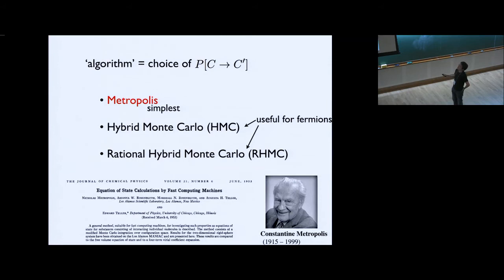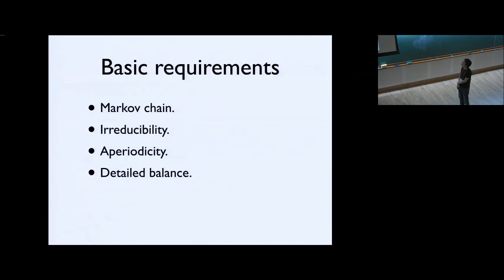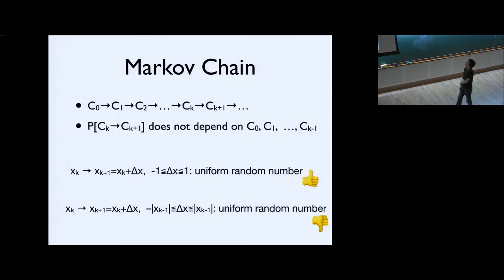The simplest algorithm appears in the famous paper of Metropolis, Rosenbluth, Rosenbluth, Teller, and Teller — though somehow only his name is attached to this algorithm. We design the transition probability so that four conditions are satisfied: Markov chain, irreducibility, aperiodicity, and detailed balance. I already said Markov chain means the transition probability from configuration k to k+1 does not depend on previous history.